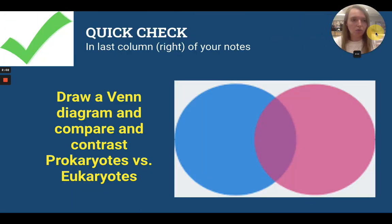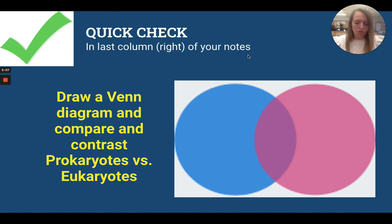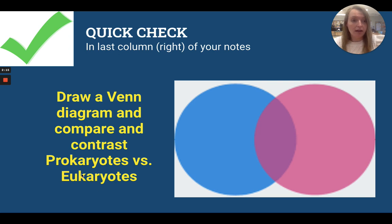We've got a quick check. So on page one of your notes in the far right-hand column, I want you to go ahead and draw a Venn diagram and fill it out — compare and contrast prokaryotes and eukaryotes.